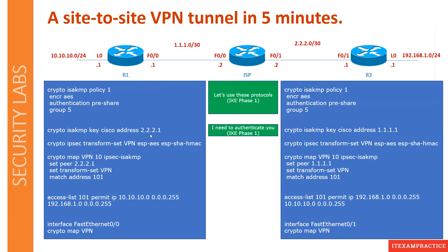We specify our pre-shared key and our destination peer IP address — 2.2.2.1 — because I am R1 and I need to reach that router. On R2, the peer IP address is 1.1.1.1 because that is R1's interface. Then I have to specify the protocols I want to use for IKE Phase 2 — this is IKE Phase 2, which covers the actual traffic we're going to send.